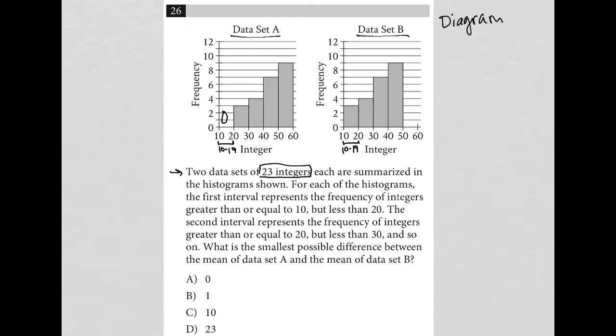But for data set B, we have three, right? So I'll be able to read this because it's a vertical axis. This will be three. There are three values between 10 and 19.